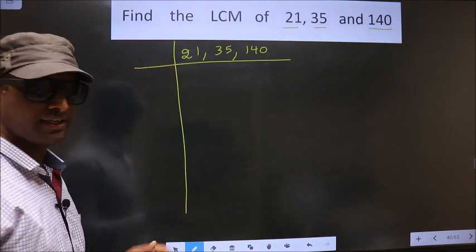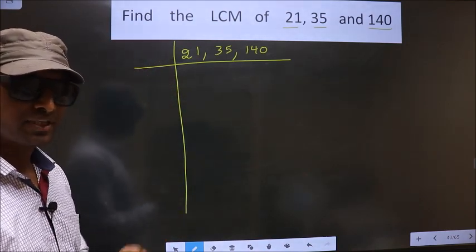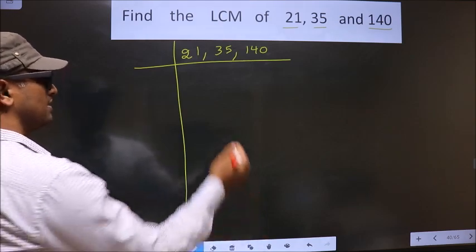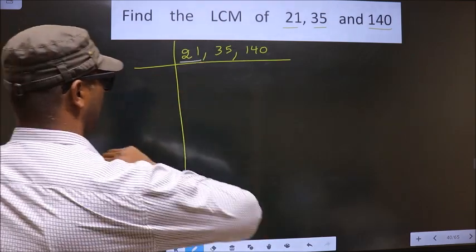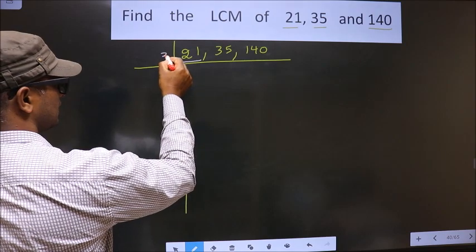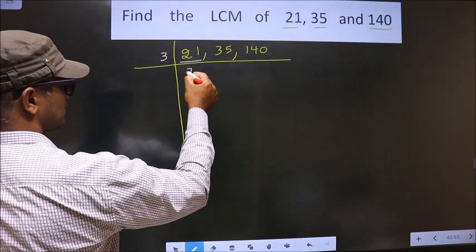Okay, next. Now we focus on the first number, that is 21. See, 21 goes in 3 table, that is 3 times 7 is 21.